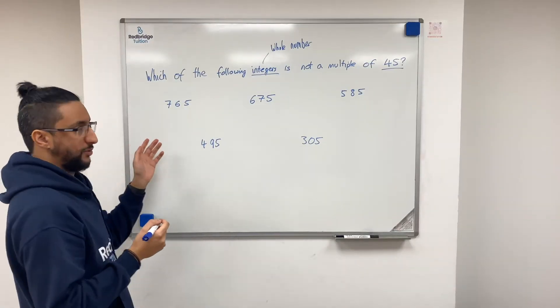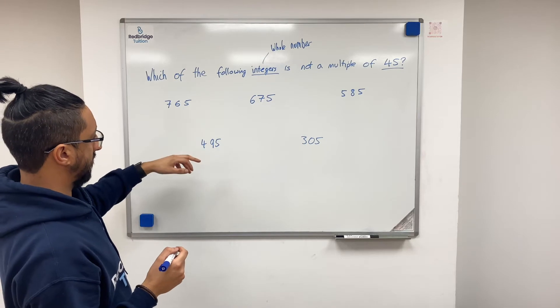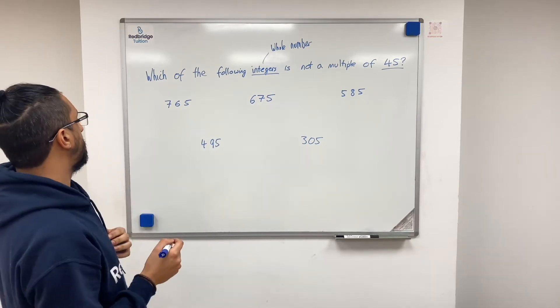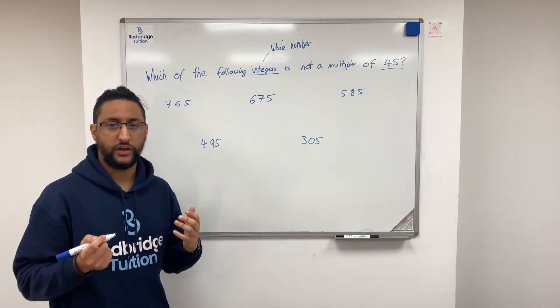So we can see they're all divisible by 5, because they all end in either a 5 or a 0. They actually all end in a 5. So we just need to check whether they are divisible by 9.